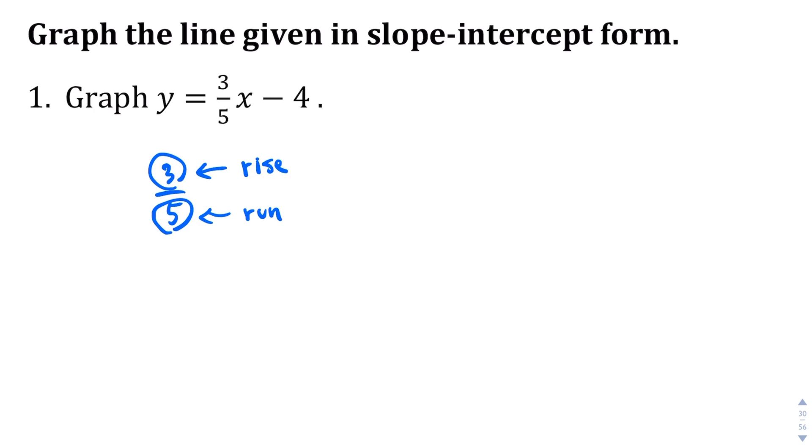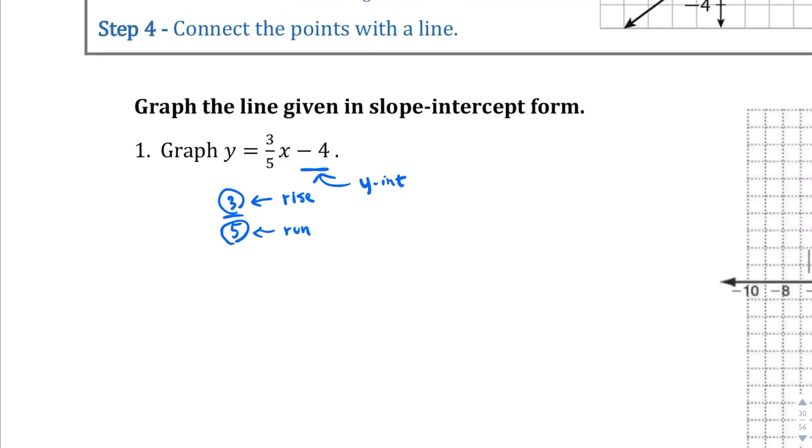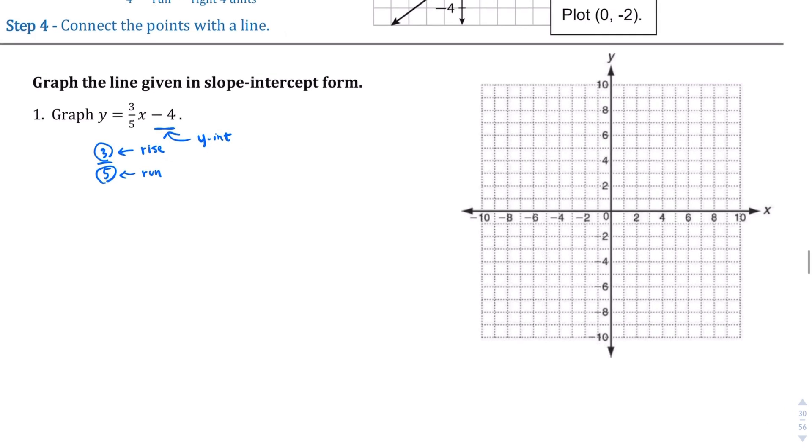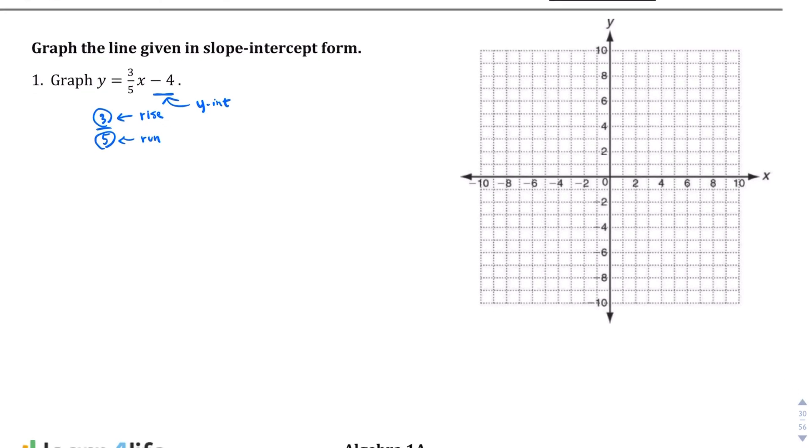This right here, the negative 4, is our starting point. This is our y-intercept. Let's see what that looks like on a graph. I'm going to zoom out a little bit. Like I said, negative 4 is going to be our y-intercept, our starting point. So I'm going to put a dot right there.